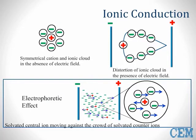The second heating mechanism is ionic conductance. Positively or negatively charged ions will be distorted by the electromagnetic field, which causes them to move toward the positive or negative sides of the field. This is known as the electrophoretic effect.